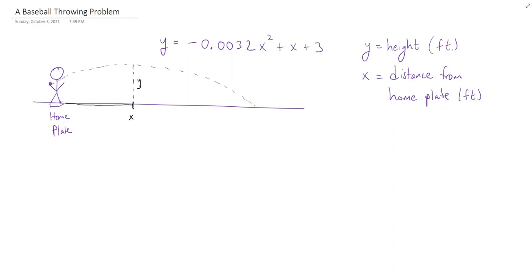Robin has already answered a couple of questions. For example, what's the initial height of the ball? So that's when x is 0. When it's still at home plate, then you just get a 3 here. So the initial height is 3.